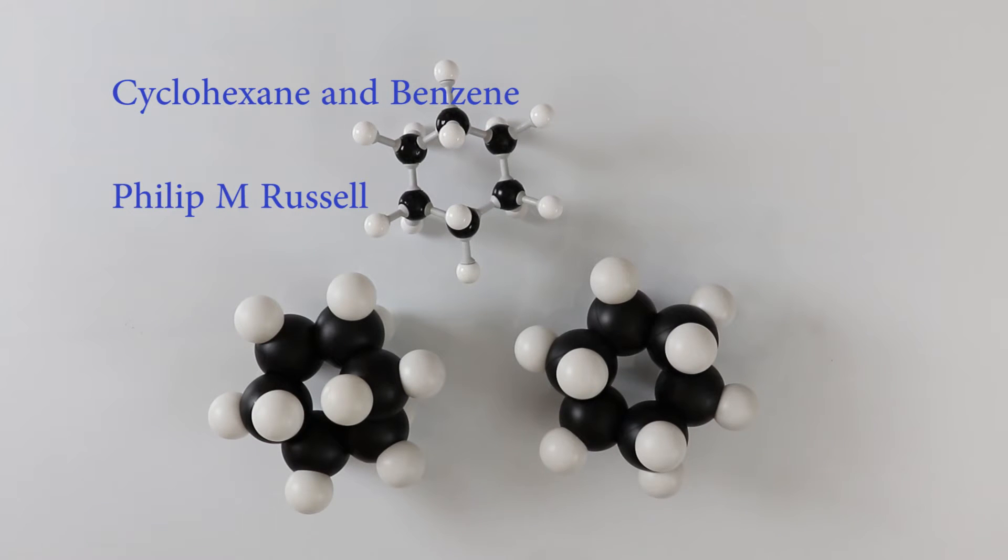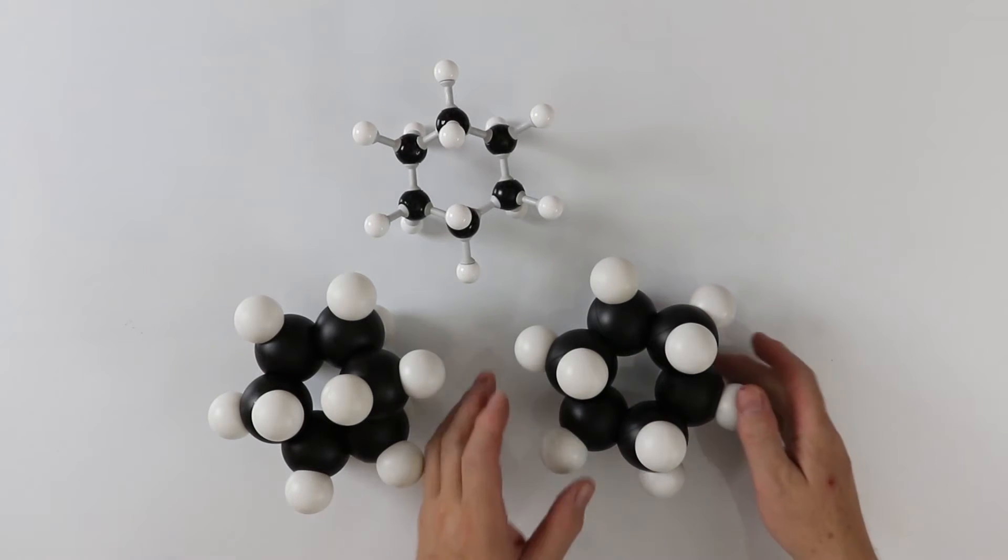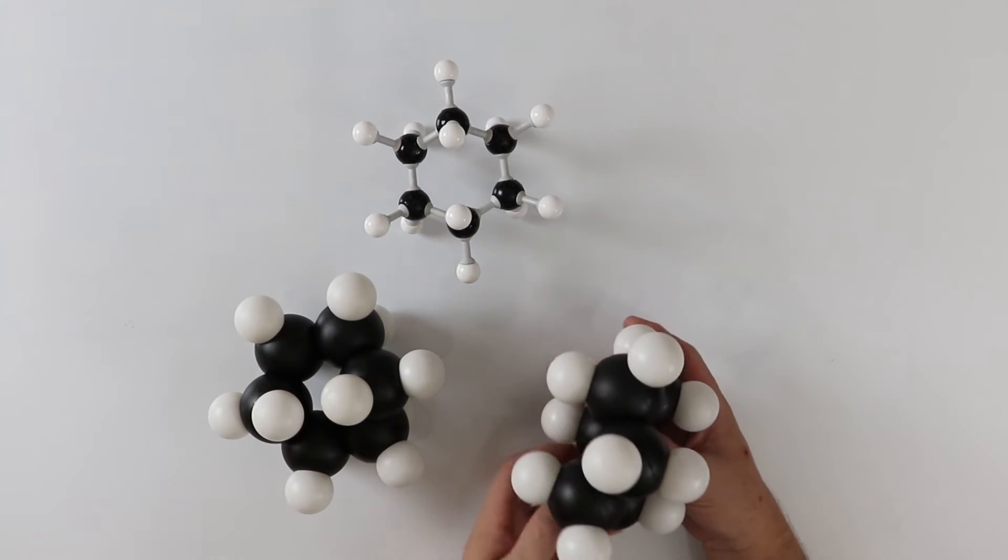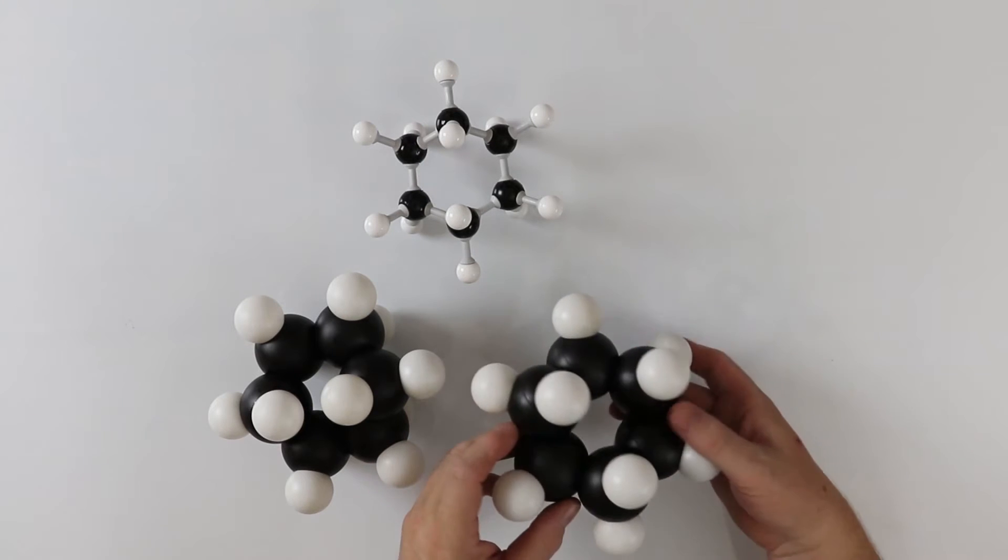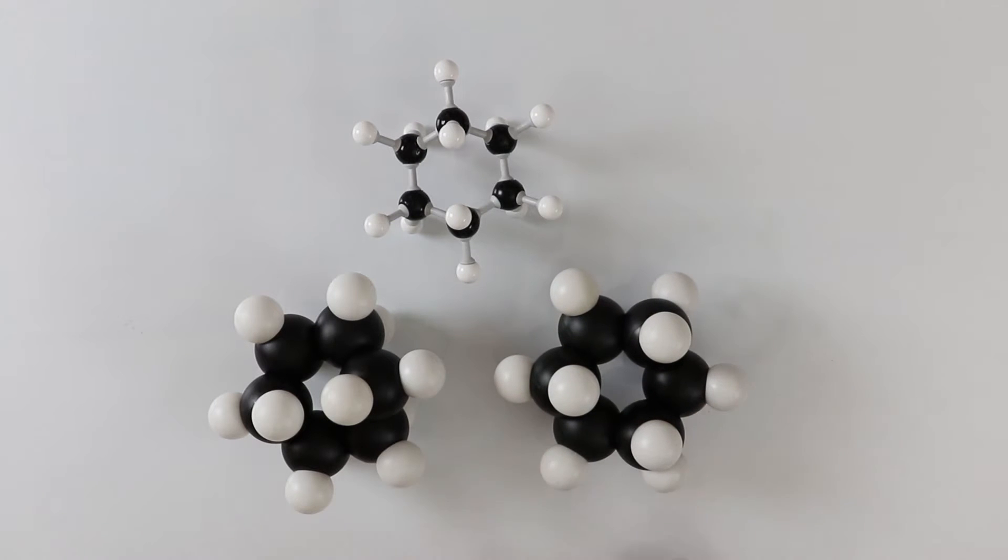Let's start by looking at cyclohexane. It is made from six carbon atoms and 12 hydrogen atoms. This is a cycloalkane. It comes in two forms which are known as the E or Z isomers.